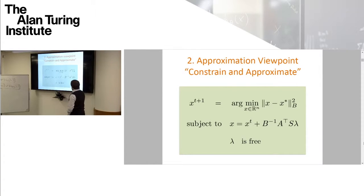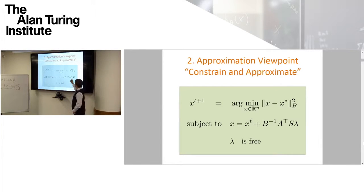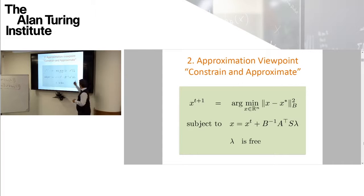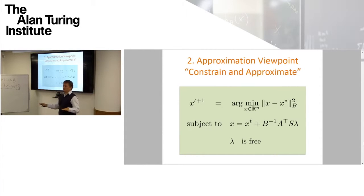Let's parse this. Looking at the constraint: you want the next iterate x to be x_t — the previous iterate — plus something. This something is random because S is random. B is a positive definite matrix you choose (think of it as the identity), and lambda is something you can tweak. We look in a random subspace spanned by the columns of the product B-inverse A-transpose S, and we want to choose something in that random subspace passing through x_t.